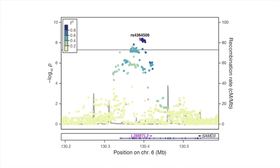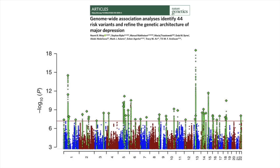But there's one problem: neighboring variants are correlated because they get inherited together and thus show similar associations. The SNP density could thus bias the PRS. At any given locus, classical PRS only uses the variant with the lowest p-value. Correlated SNPs are removed using a method called LD clumping.